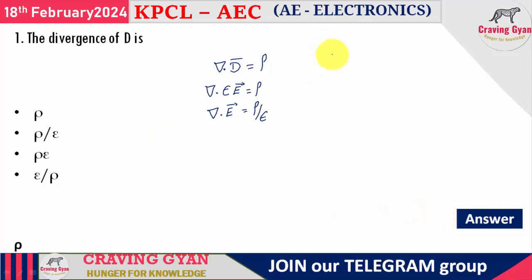Similarly, in terms of the magnetic field, if we express del dot B with respect to Gauss's law, we get del dot B equals 0.